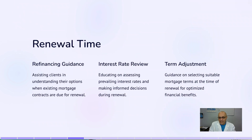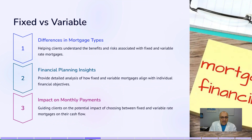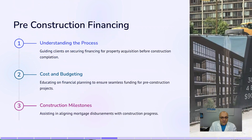Number four: renewal time. Mortgages in Canada renew every five or three years on average, so you have to educate your clients on renewal options. Fixed versus variable is another very important topic. People really loved variable rates, but what happened in the last two years means fixed rates may be more relevant in the future.